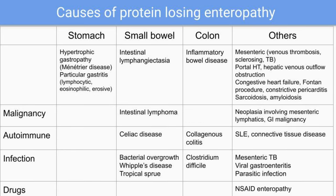There are many other causes for protein-losing enteropathy, like mesenteric problems, portal hypertension, hepatic venous outflow obstruction, congestive heart failure, Fontan procedure, constrictive pericarditis, sarcoidosis, and amyloidosis.